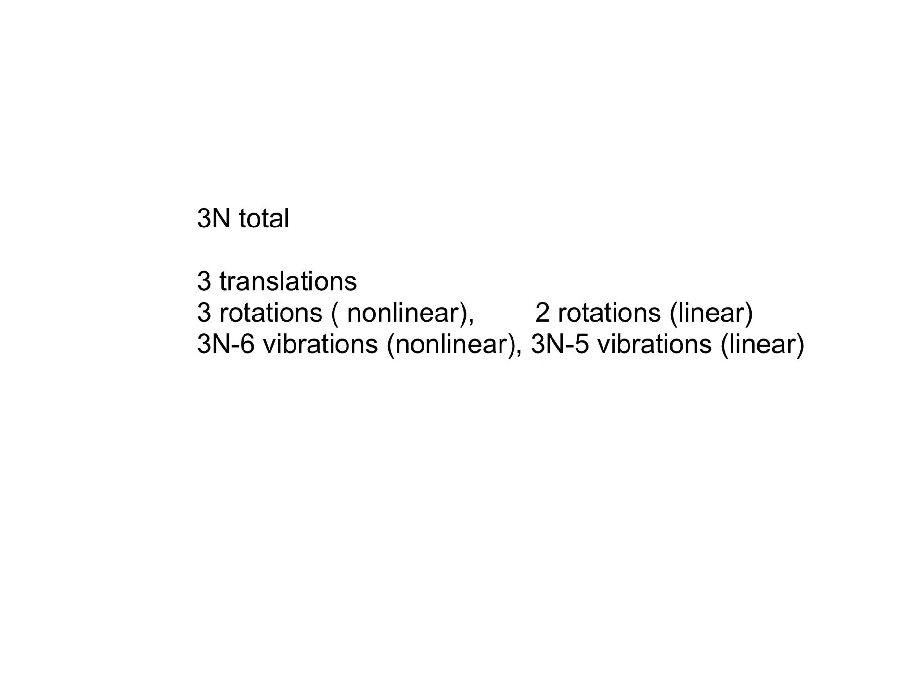In summary, there are three N total degrees of freedom. Three of those are translations, always. Three are rotations when you have a nonlinear molecule, and two are rotations when you have a linear molecule. That leaves three N minus six vibrations for a nonlinear molecule, and three N minus five vibrations for a linear molecule.